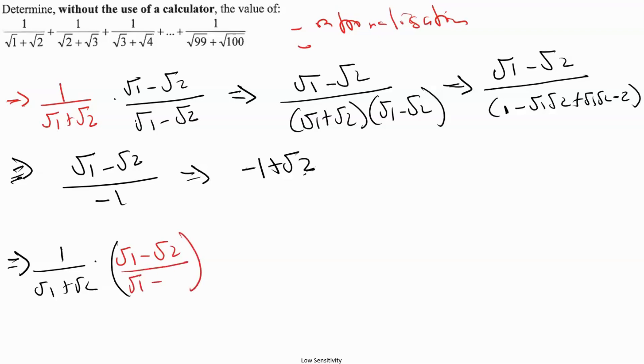Plus we're going to continue that on all the expressions until we get to 1 over root 99 plus root 100 times root 99 minus root 100 over root 99 minus root 100.